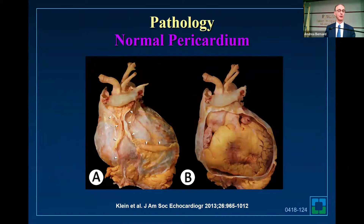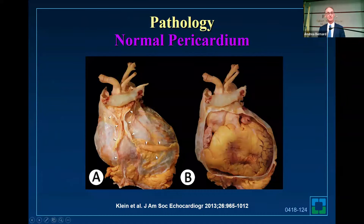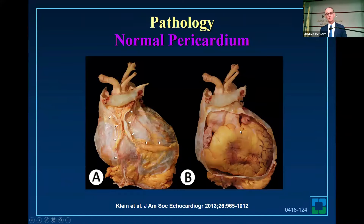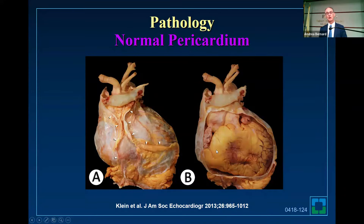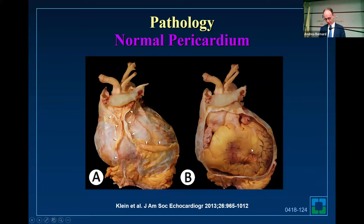Let's talk about pathology. Here's an example from our guideline showing a specimen of the heart. You can see there's a lot of fat around the heart, with pericardial attachments going up to the great vessels. When you remove the outer layer, you see a lot of epicardial fat. For the fellows — make sure anteriorly you don't call it a pericardial effusion. It's usually fat or a fat pad anterior to the RV.